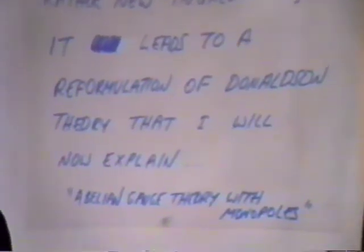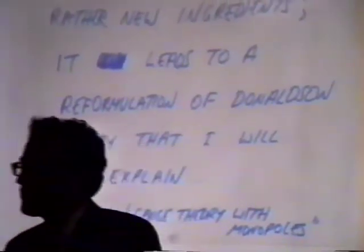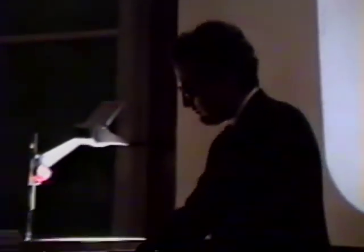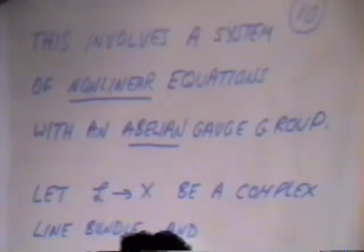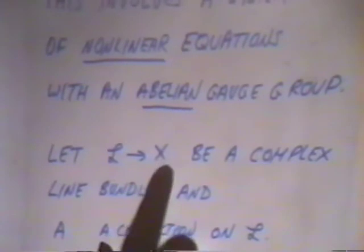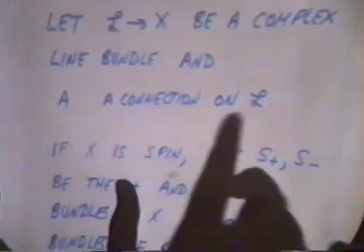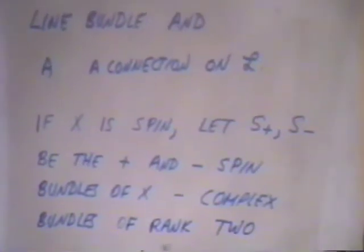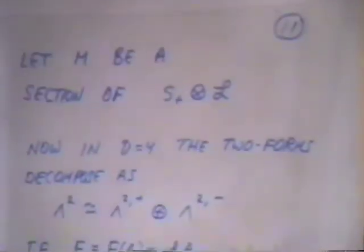It involves an abelian gauge theory with monopoles that's equivalent, for topological computations, to the non-abelian gauge theory without monopoles that was used by Donaldson. Here we have a system of nonlinear equations, but with an abelian gauge group. For instance, if X is spin — X is a four-manifold — we take a complex line bundle L over X and we let capital A be a connection on L. And then we have the two spin bundles, S⁺ and S⁻, which are complex bundles of rank two. If X isn't spin, then we combine the spin bundle and L into a spin-C structure.